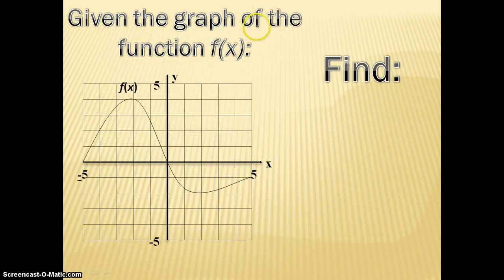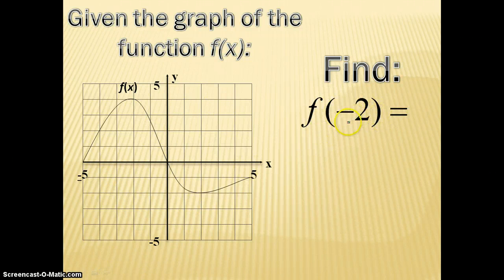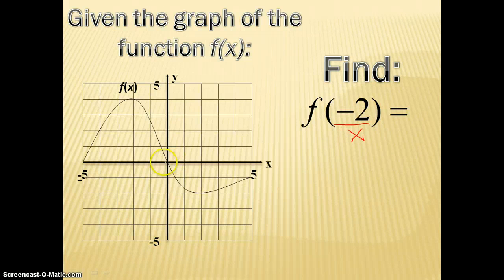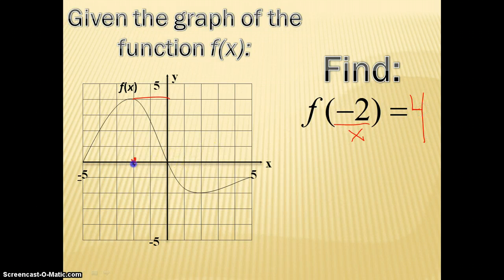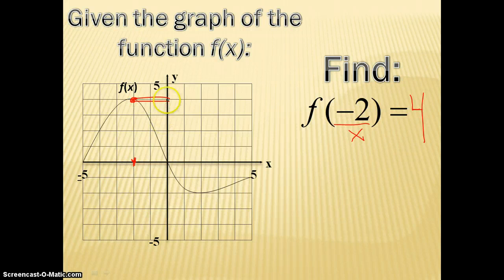Given the graph of the function f of x, we want to find f of negative 2. Remember, whatever is in the parentheses is your x. So go to where x is negative 2 on the graph. What is the y value there? The y is 4. So f of negative 2 equals 4. You're looking: when x is negative 2, what is your y value? Y is 4.